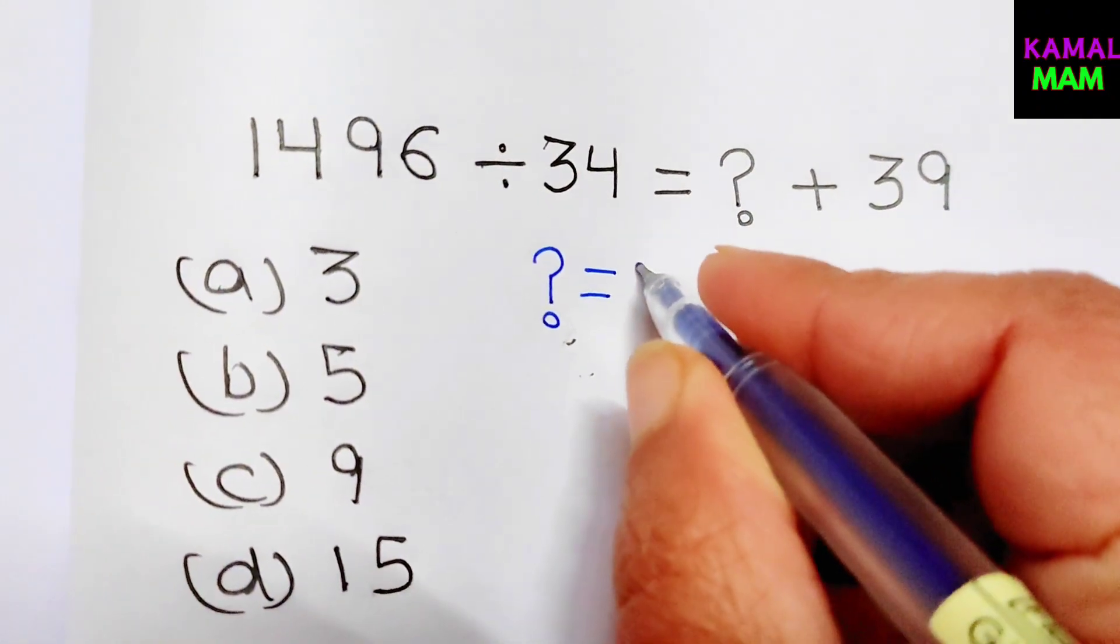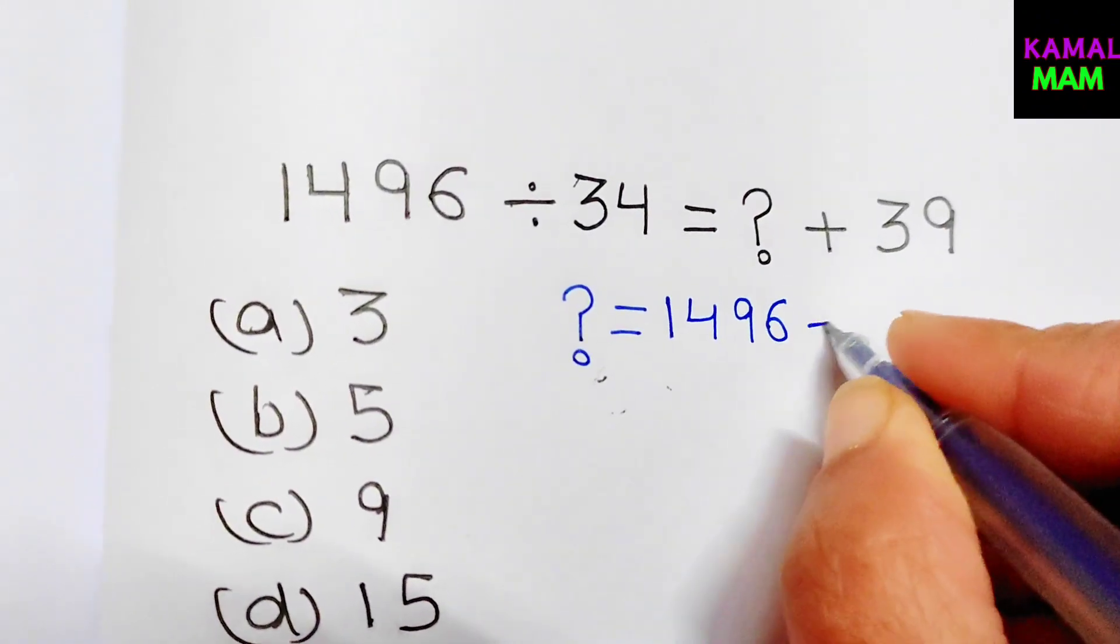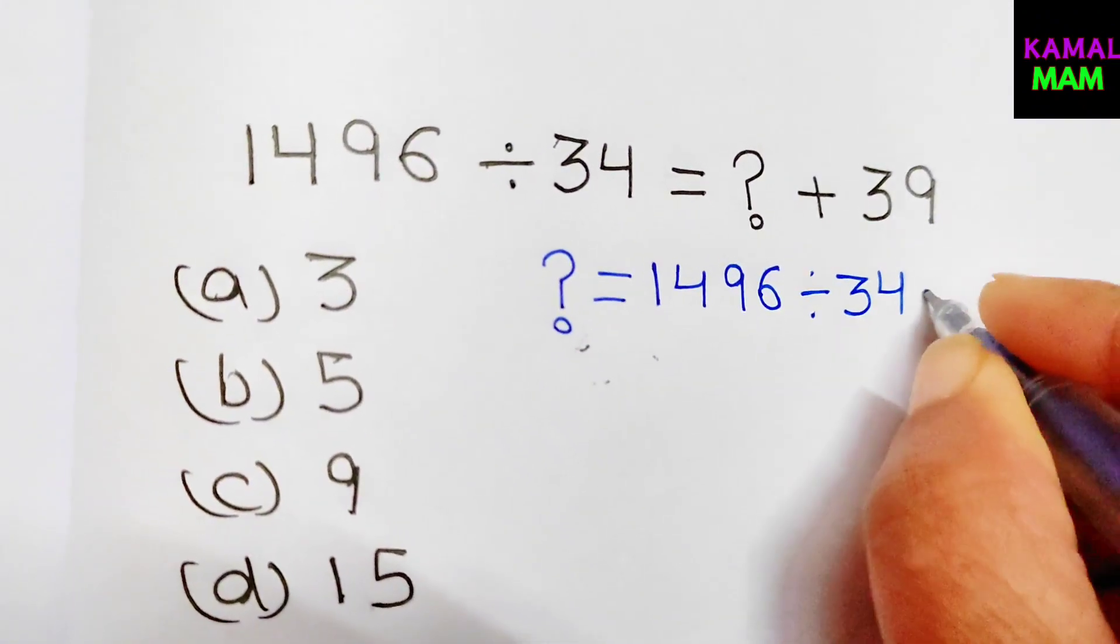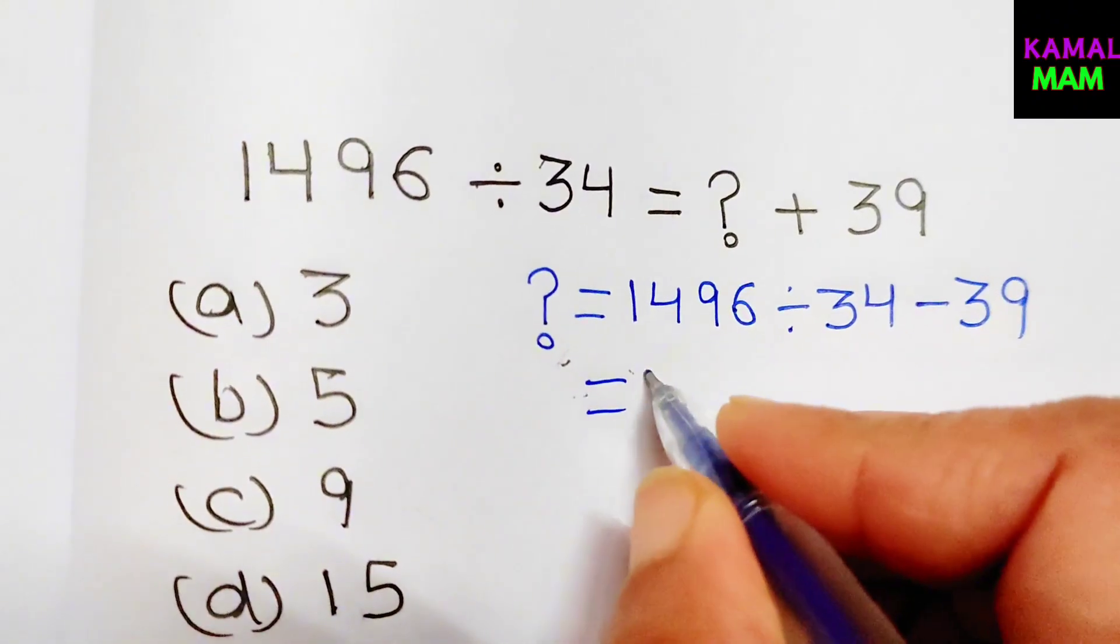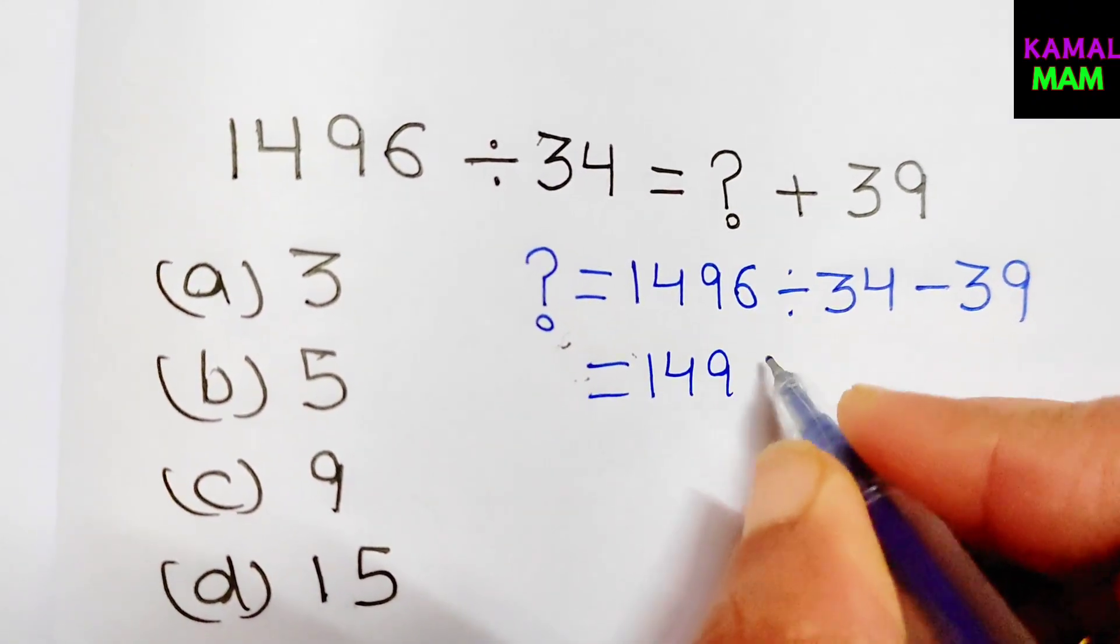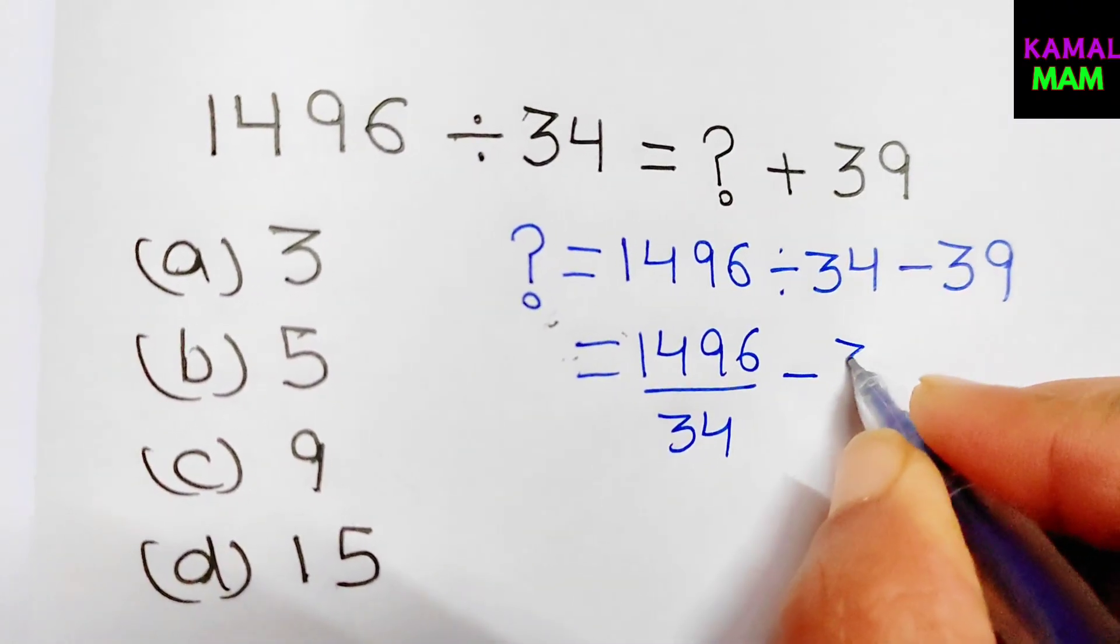What we get is 1496 divided by 34 minus 39.